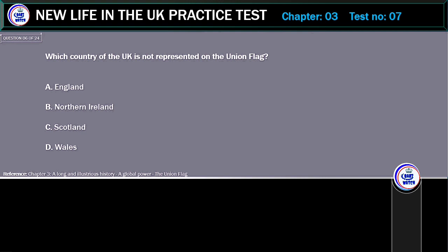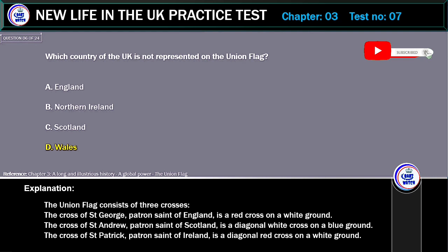Which country of the UK is not represented on the Union flag? A. England. B. Northern Ireland. C. Scotland. D. Wales. Correct answer: Wales. Explanation: The Union flag consists of three crosses. The cross of St. George, patron saint of England, is a red cross on a white ground. The cross of St. Andrew, patron saint of Scotland, is a diagonal white cross on a blue ground. The cross of St. Patrick, patron saint of Ireland, is a diagonal red cross on a white ground.